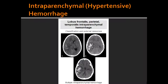Intraparenchymal hypertensive hemorrhage. What is the cause of intraparenchymal hemorrhage? Intraparenchymal hemorrhage is most commonly caused by systemic hypertension. Other causes also include angiopathy, vasculitis, and neoplasms.